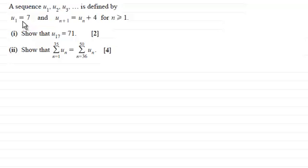And it's defined by u₁, the first term being 7, and then this recurrence relationship or term-by-term relationship, uₙ₊₁ equals uₙ plus 4, for n greater than or equal to 1.